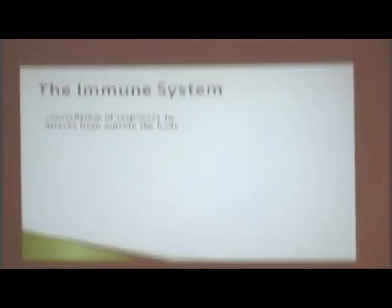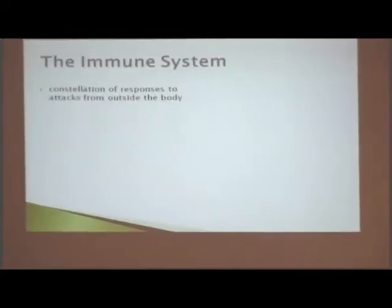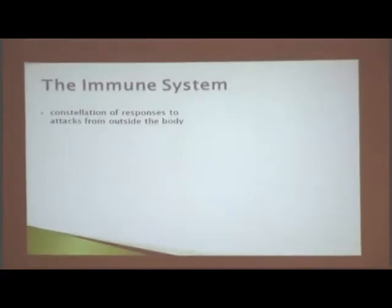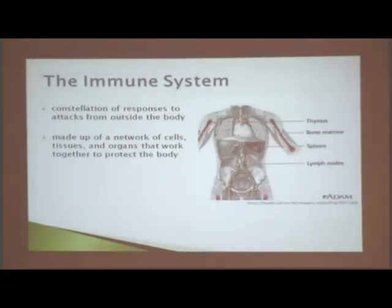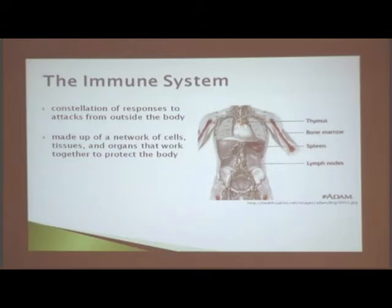The immune system is a constellation of responses to attack outside the body, and it's made up of a network of cells, tissues, and organs that work together to protect the body. Some of the organs include the thymus, bone marrow, spleen, and lymph nodes.